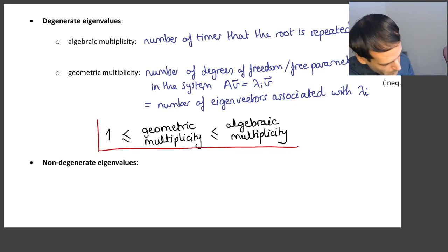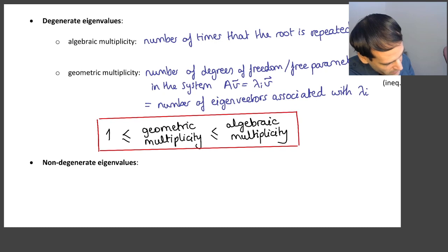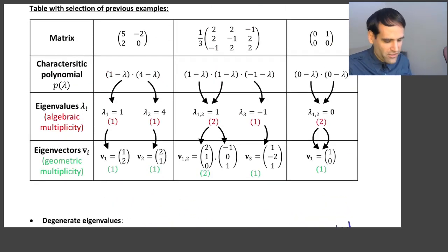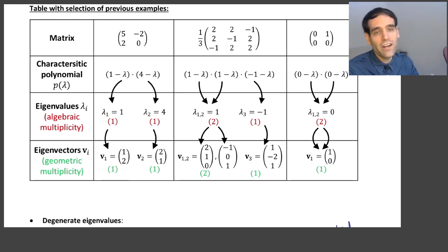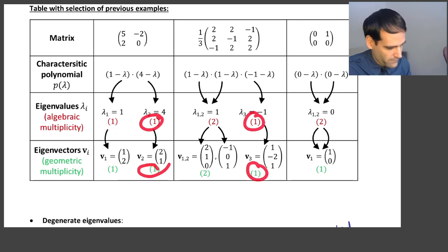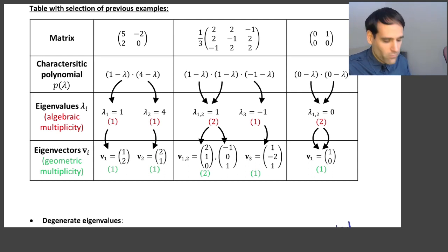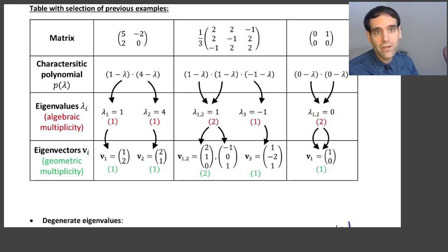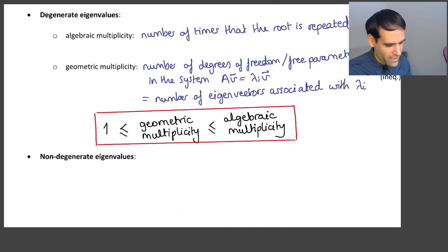The general rule is very simple: the geometric multiplicity is less than or equal to the algebraic multiplicity, and both are always greater than or equal to 1. This means when the algebraic multiplicity is 1, the geometric multiplicity can only be 1. When the algebraic multiplicity is 2, you can have 2 or 1 eigenvectors. If it's 3, you could have 3, 2, or 1 eigenvectors, and so on.